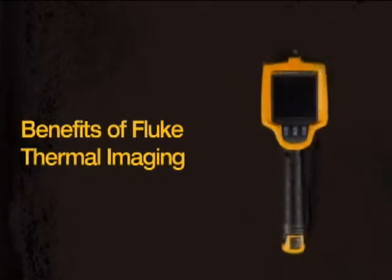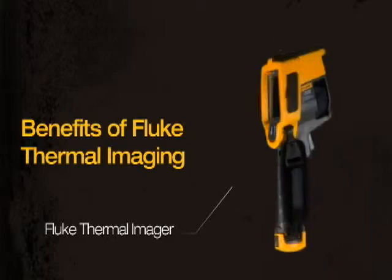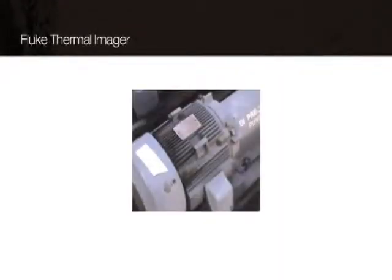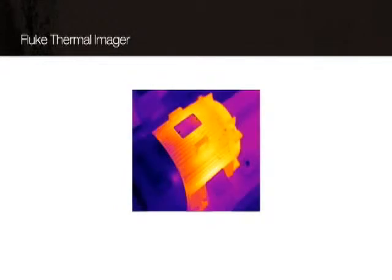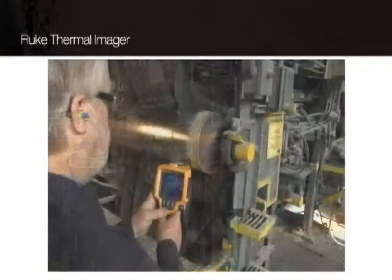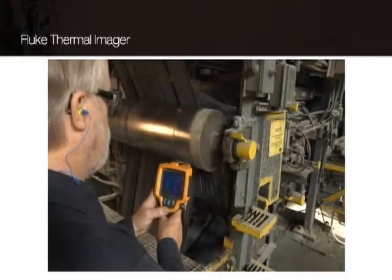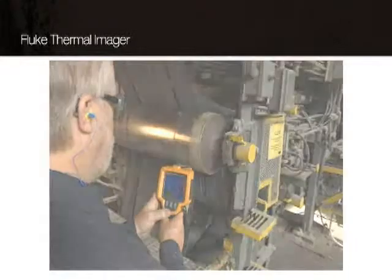The benefits of Fluke thermal imaging: prevent problems before they occur with thermal imaging. Problems invisible to the naked eye can be seen using a thermal imager. Simply aim, focus, and take a snapshot of the building or equipment that you'd like to inspect, making your job easier, faster, and safer.